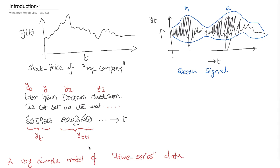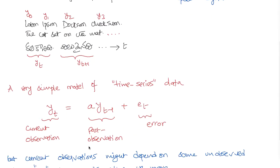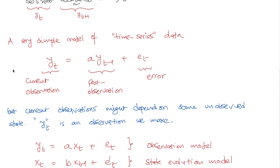In the context of language, for example, I might want to annotate text data with part-of-speech tags. Given a sentence like 'the cat sat on the mat,' what is the POS tag for 'cat'? Is it a noun? Is it a verb? Is it an article? Is it a preposition? That's my interest.